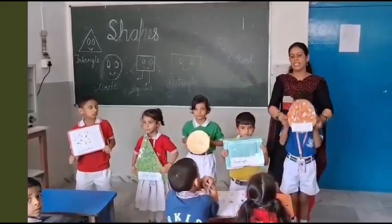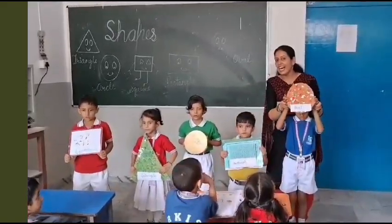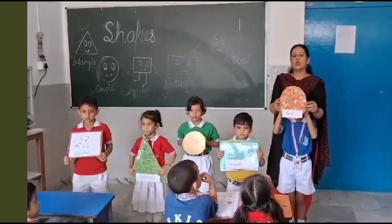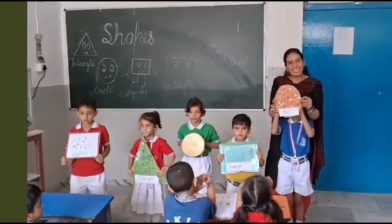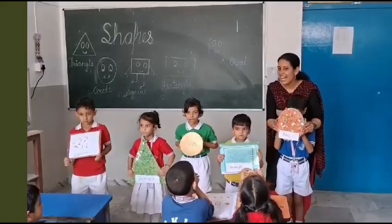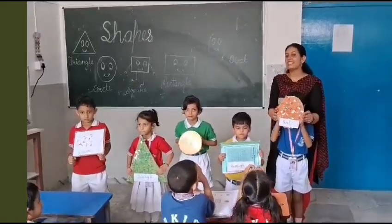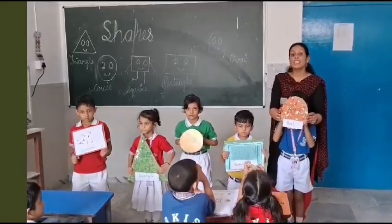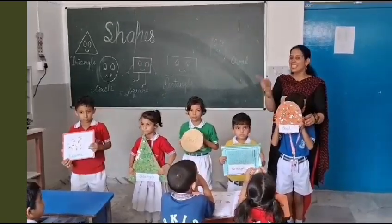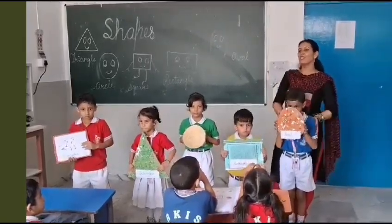Next one is oval. Oval has no corner and no sides. How many sides in the oval? Zero. Zero. Very good.